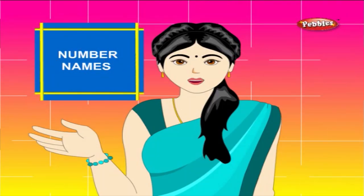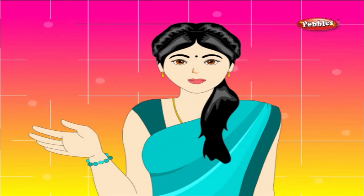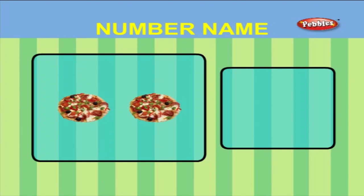Number names. Now, let us learn the number names. There is one teddy bear. O N E - One. There are two pizzas. T W O - Two.